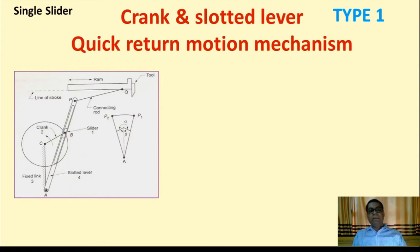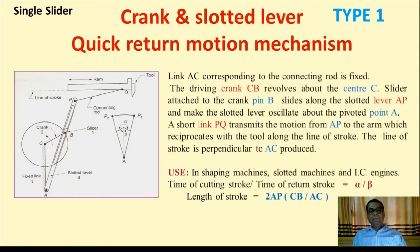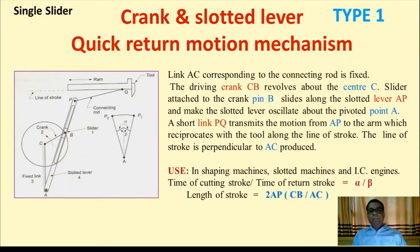In the given figure on the left-hand side, there is a crank and a slotted lever A to P. At point B there is a slider block, and CB is the crank. The pin B slides along the slotted lever AP and makes the slotted lever oscillate about the pivot point A. A short link PQ transmits the motion from AP to the arm.